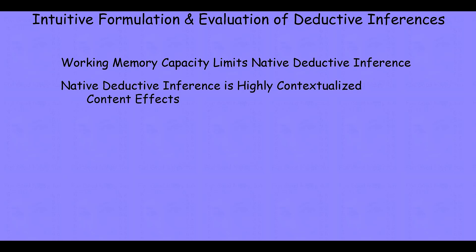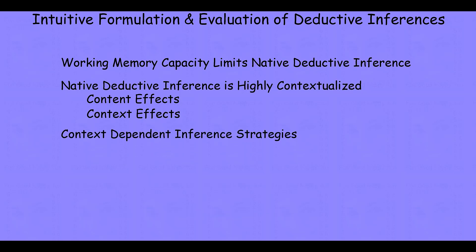As a result, we'll see there are a number of content effects or biases, and even context effects or biases, that emerge in our native capacity. Once we've discussed our native ability to formulate and evaluate deductive inferences, we'll turn our attention to context-dependent inference strategies — including context-dependent conditional or deductive inference strategies, and probabilistic ones as well.